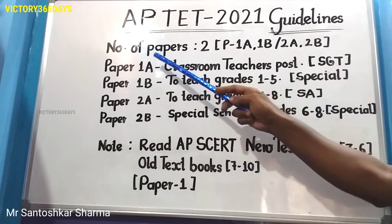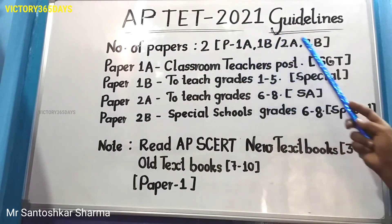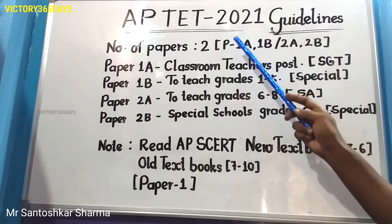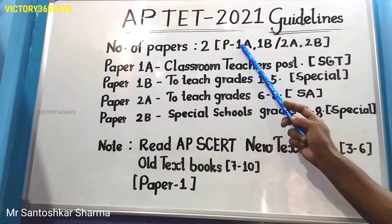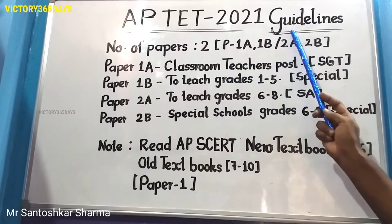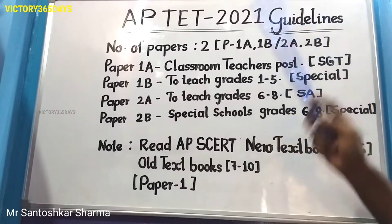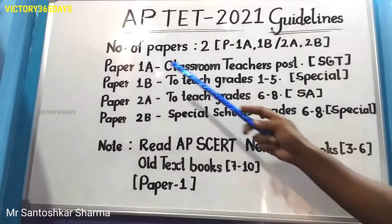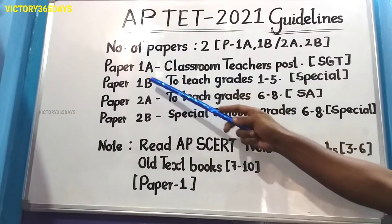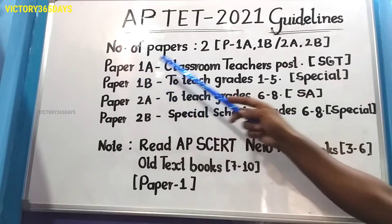There are two papers: Paper One and Paper Two. Paper One consists of 150 marks and Paper Two also consists of 150 multiple choice question marks. Now, category-wise, we divide them — Paper 1A is for classroom teacher posts.